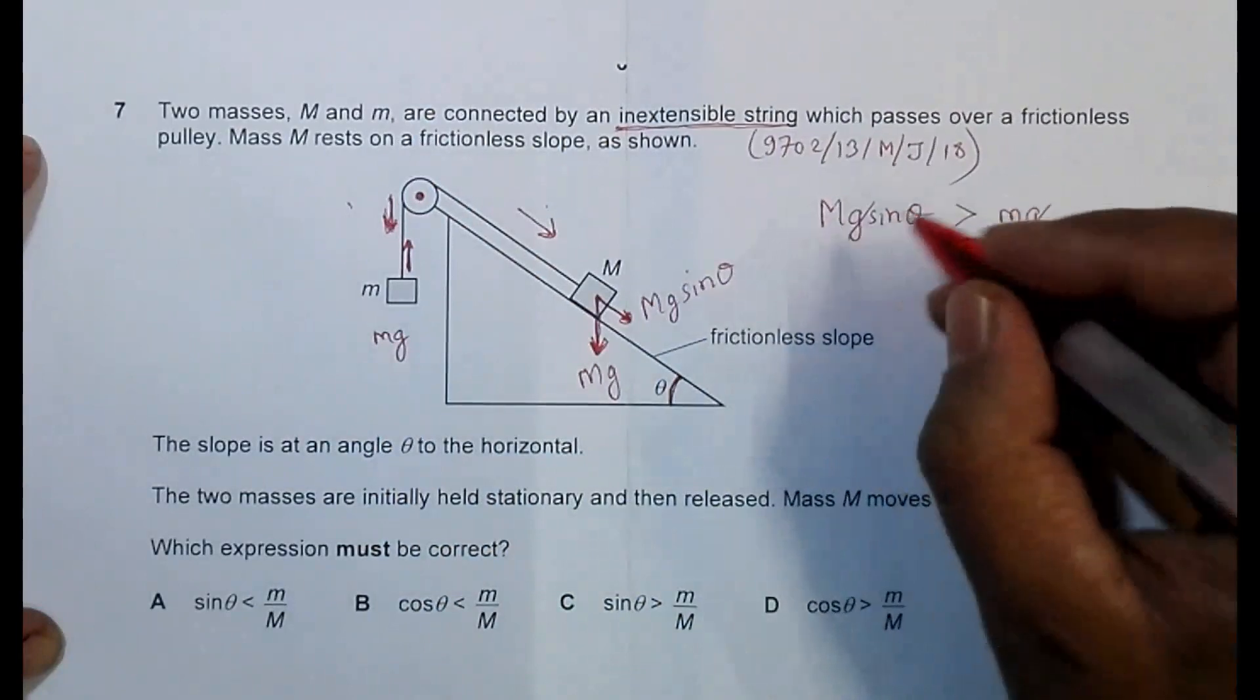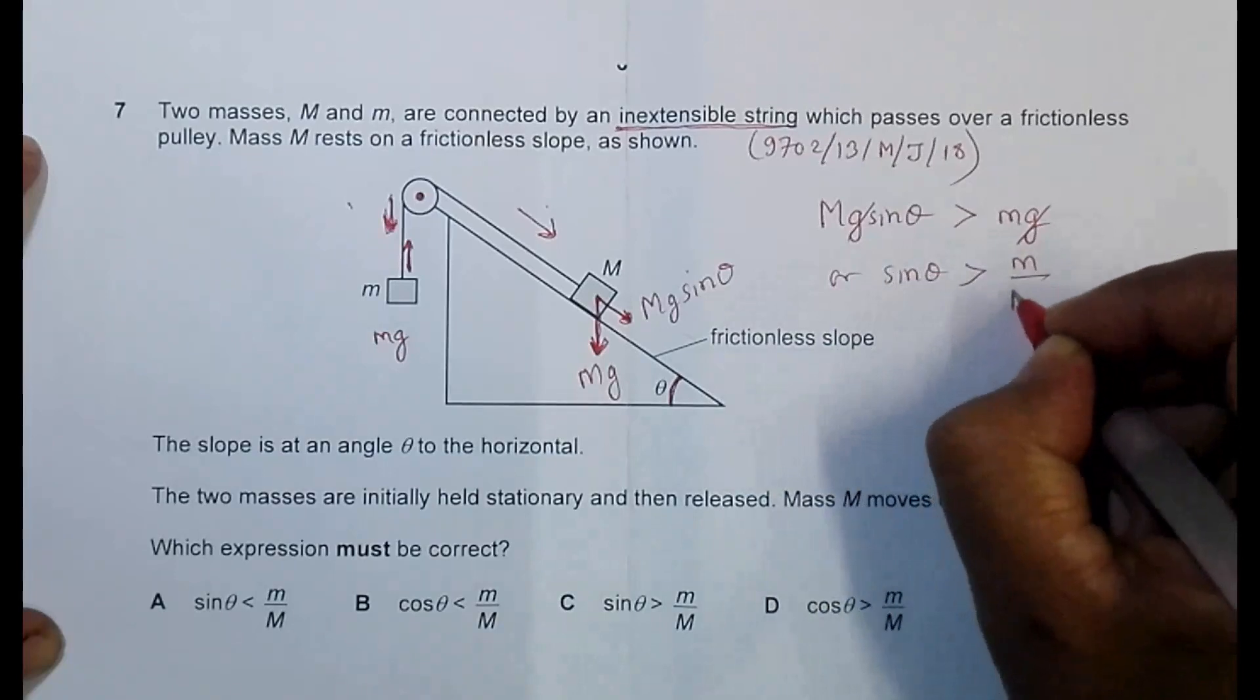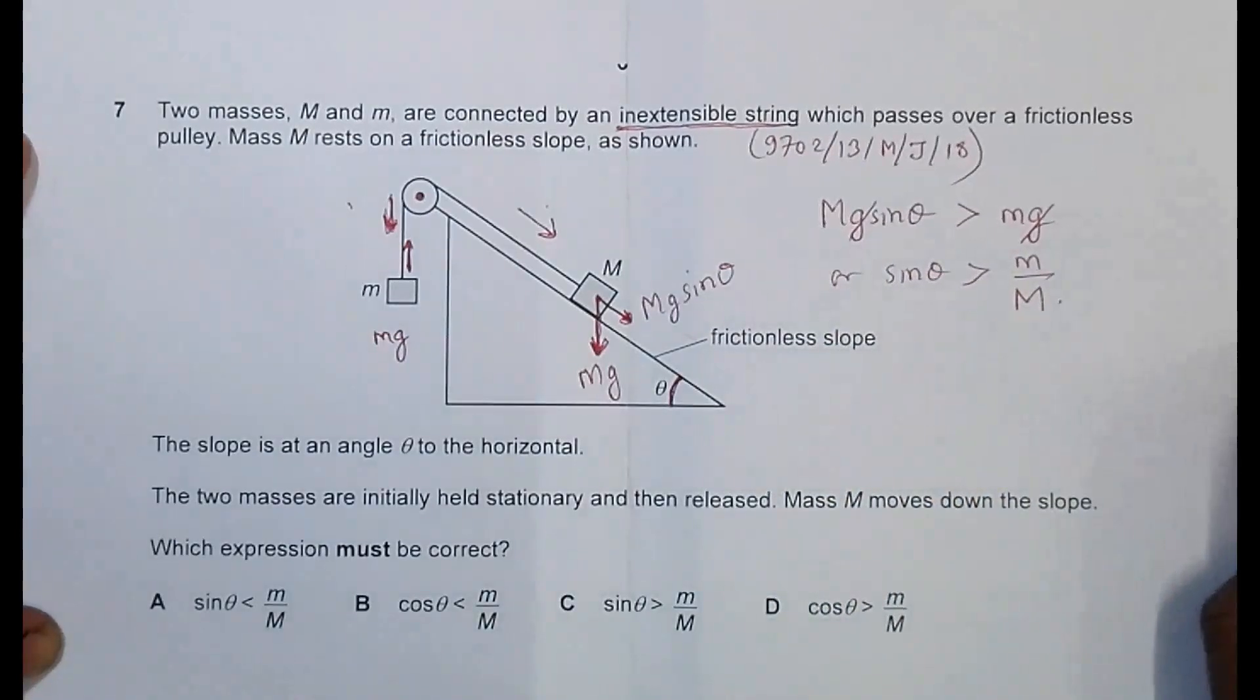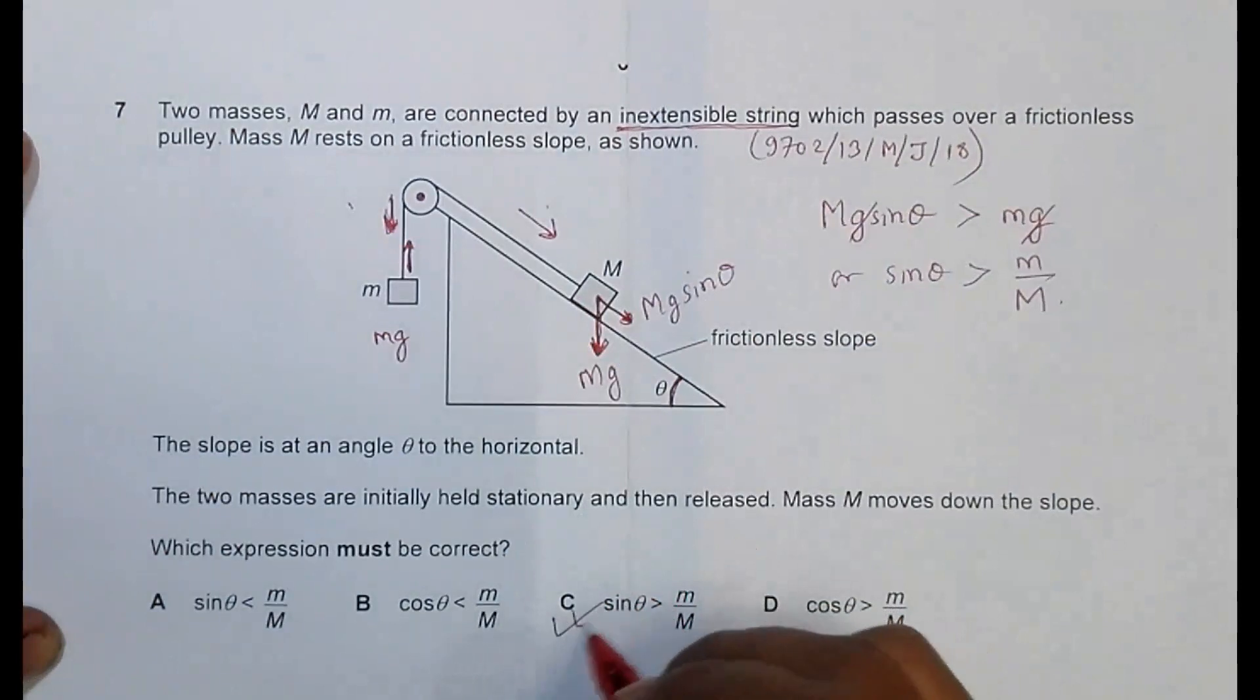So G and G cancels, which gives us sine theta should be more than small m by large M. And we are going through the choices here. Choice number C is the correct choice.